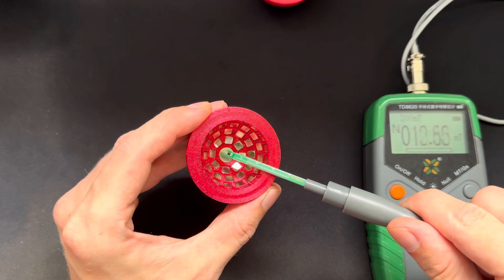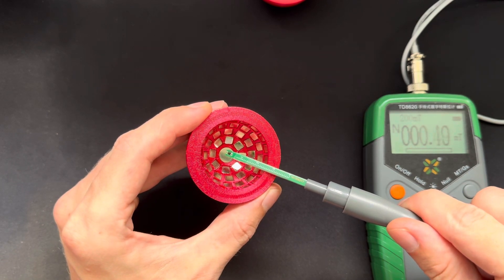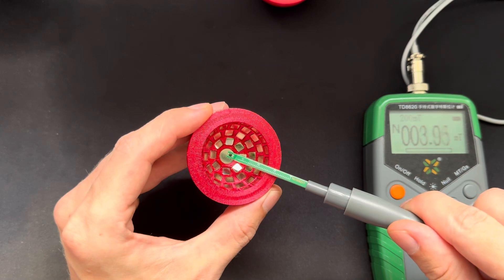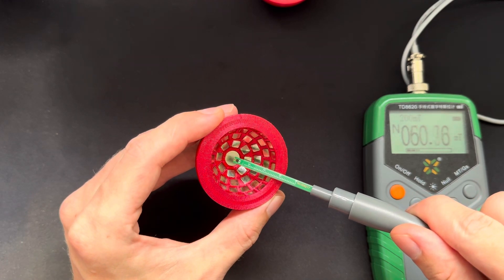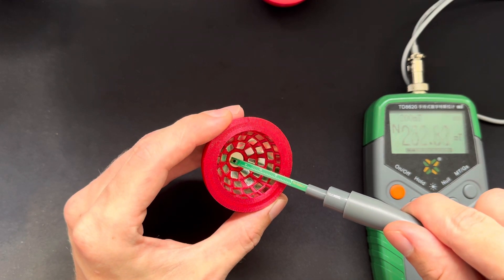Then right here we have the zero point where we have zero magnetic flux. Then it switches to a north pole field on the inside here which is very strong.